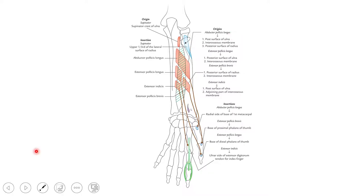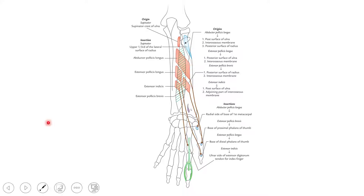Moving on to the next muscle, the extensor pollicis brevis. This extensor pollicis brevis receives its origin only from the posterior surface of the radius along with the adjoining interosseous membrane, beneath the abductor pollicis longus attachment. The insertion of this extensor pollicis brevis descends down to reach the base of the proximal phalanx of the thumb along its dorsal surface. Wherever the word pollicis is seen, it refers to the thumb.